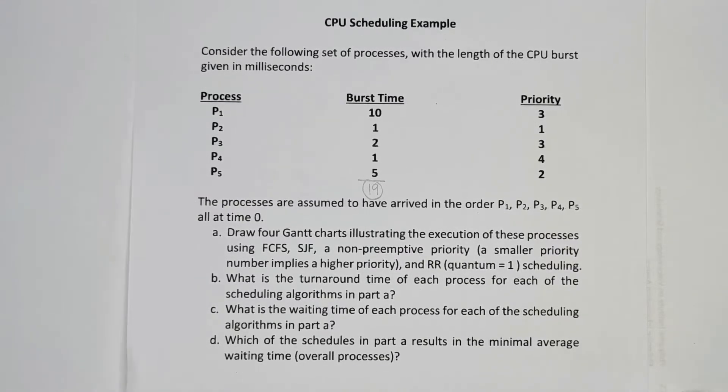For letter A, we need to create 4 Gantt charts: first come first serve, SJF, non-preemptive priority, and round robin. Let's start with FCFS. The Gantt chart always starts with 0, and the total burst time is 19 for the 5 processes.